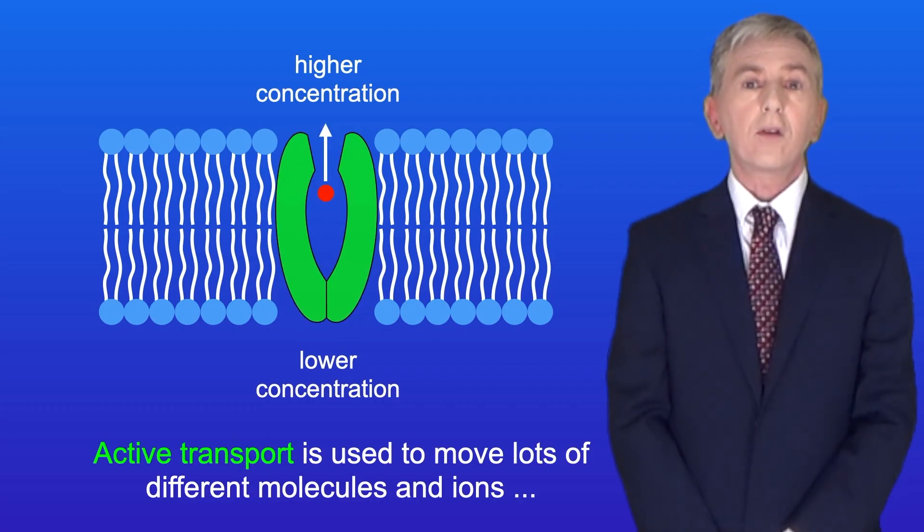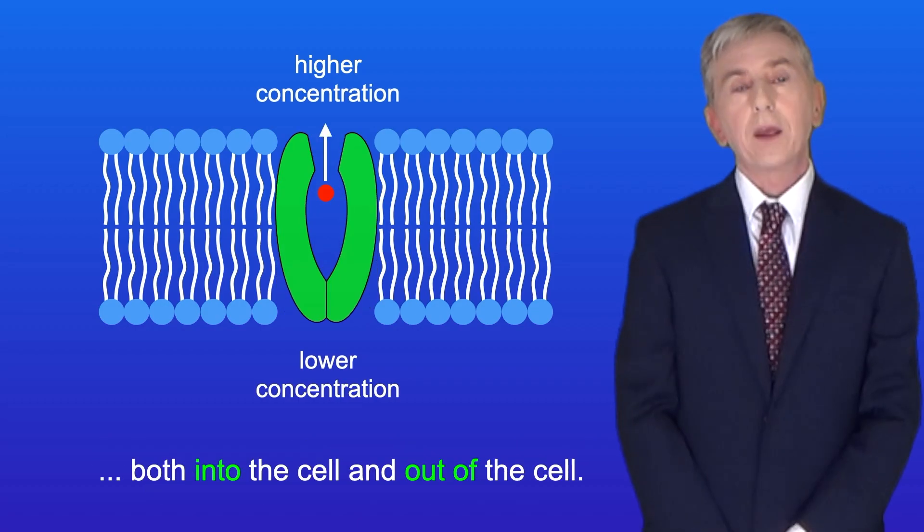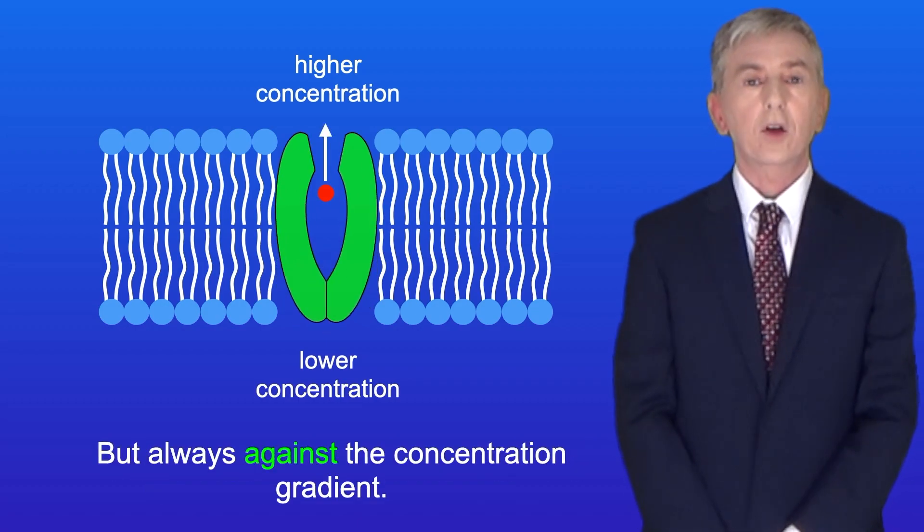Active transport is used to move lots of different molecules and ions, both into the cell and out of the cell, but always against the concentration gradient.